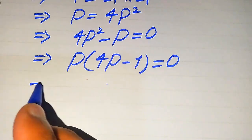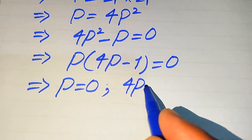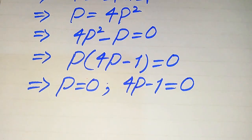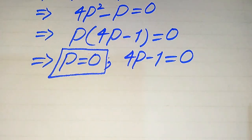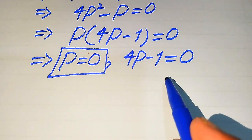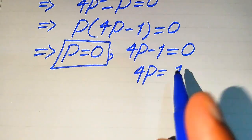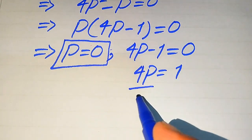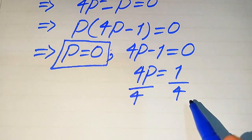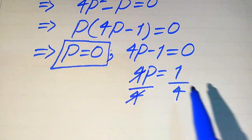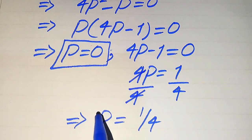We divide this equation into two cases. The first case gives us p equals 0, and the second case is 4p minus 1 equals 0. The first case gives the first root of the equation. For the second root, we move minus 1 to the right-hand side to get plus 1, and since 4 is multiplied, we divide both sides by 4. The 4 cancels out and we get p equals 1 divided by 4.